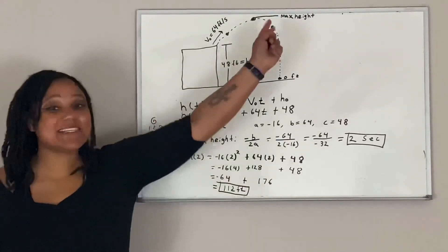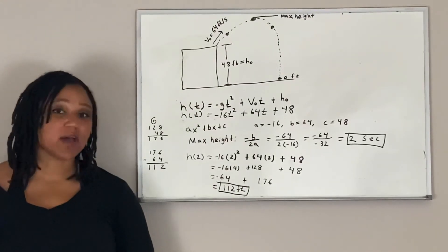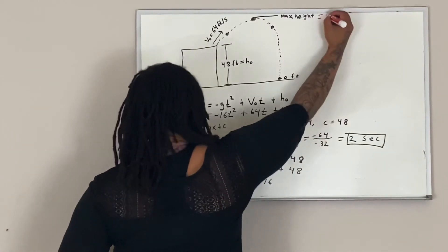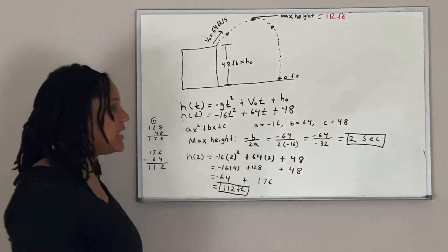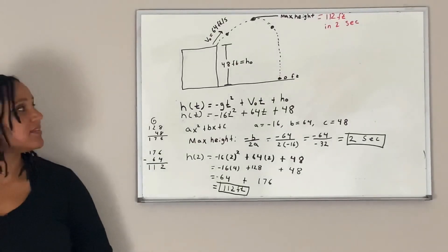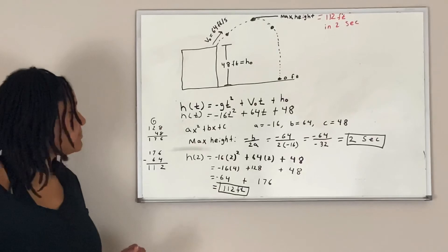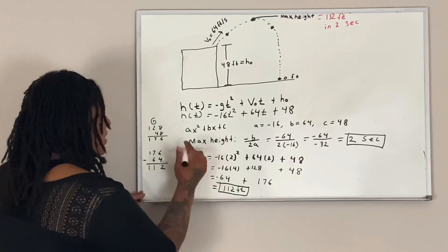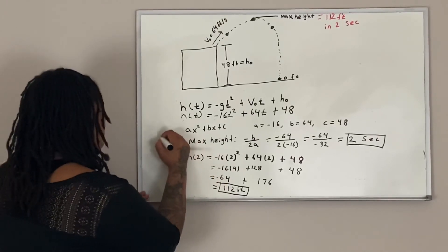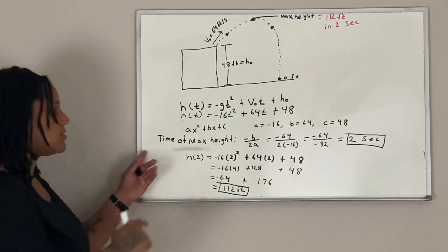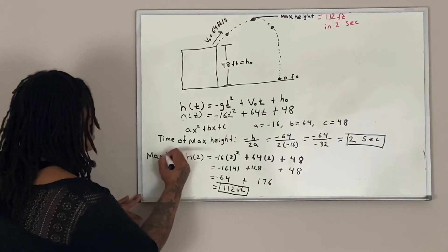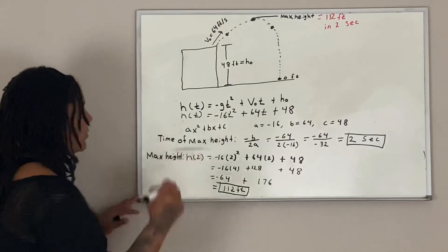So our maximum height is 112 feet. Filling in the picture: our max height equals 112 feet, and it happens in 2 seconds. Our 2 seconds is the time of max height, and h of 2 is your actual max height. There you have it.